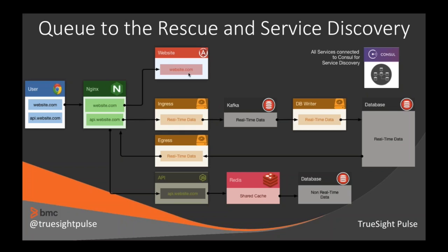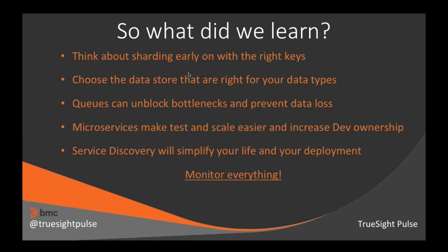What did we learn? Think about sharding early on and use the right keys. A lot of the time you'll pick something like account ID, which is too high-level if you have to start breaking things down — it only works when you have that size of box. When you go above that, you'll need to either create a bigger box or redo your sharding strategy. Choose the data store and the right data for your types. How you access data, how you read, write, and replicate — not every data has to fill the same requirements, so you probably don't have to use the same service for everything.